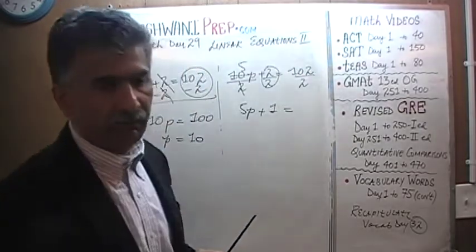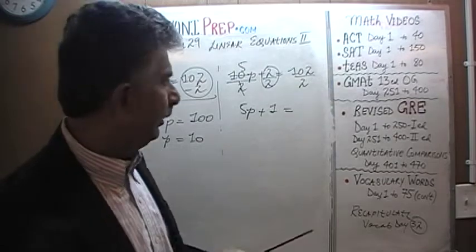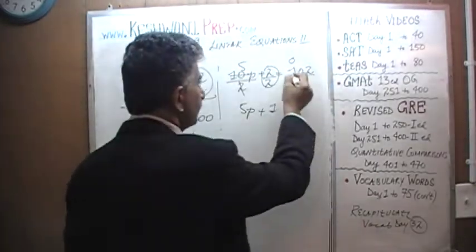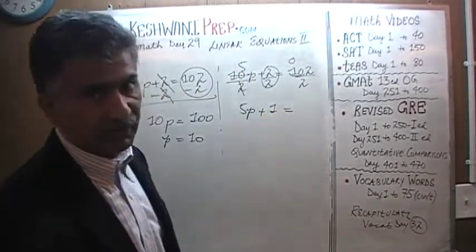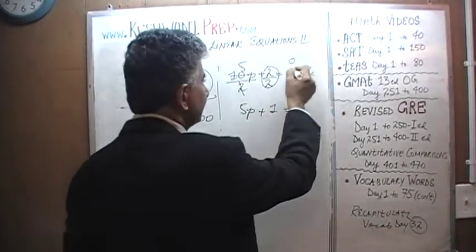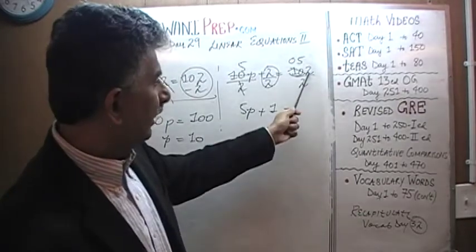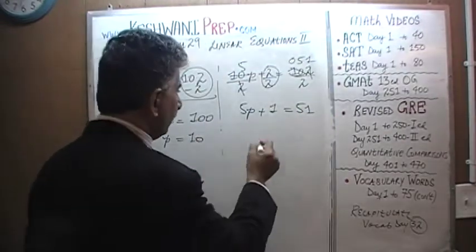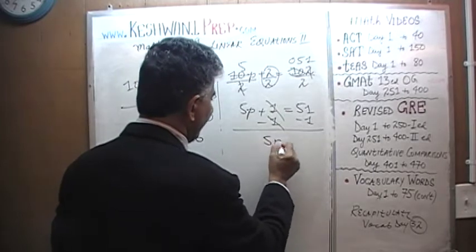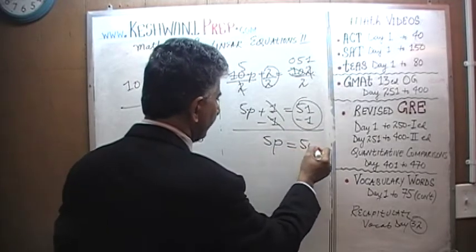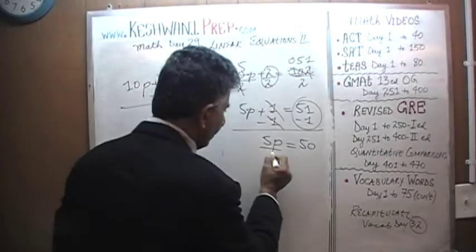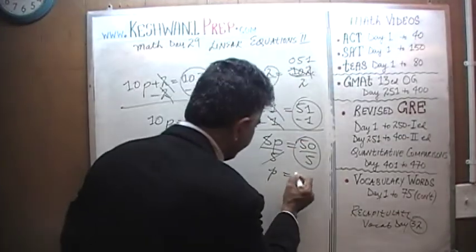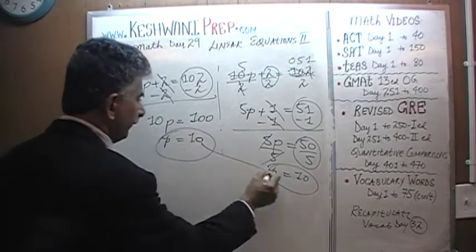10 divided by 2 is 5, so 5p plus 2 over 2, which is 1, equals 102 divided by 2, which is 51. Subtract 1 from both sides and we find that 5p equals 51 minus 1 which is 50. Divide both sides by 5 and p equals 50 over 5 which is 10 — just like before.